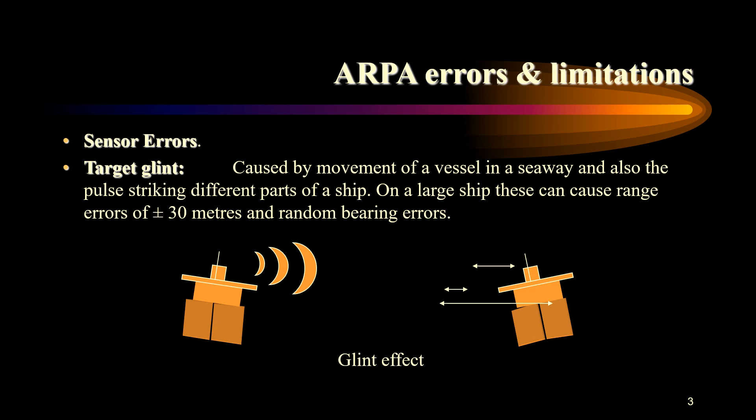The next cause of error is target glint, caused by movement of a vessel in a seaway and by the pulse striking different parts of a ship. On a large ship this can cause range errors of plus or minus about 30 meters and random bearing errors that cannot be calculated or given a specific value.